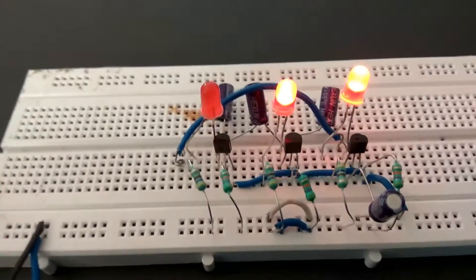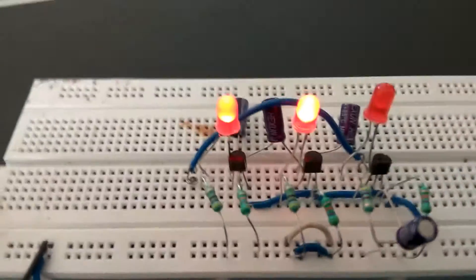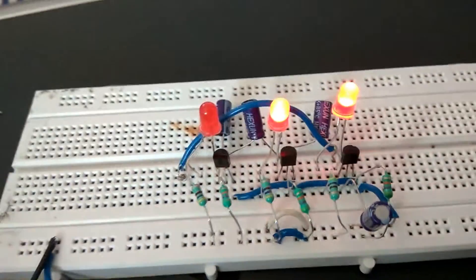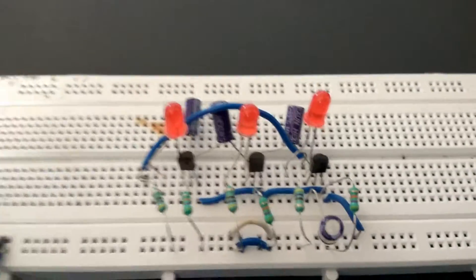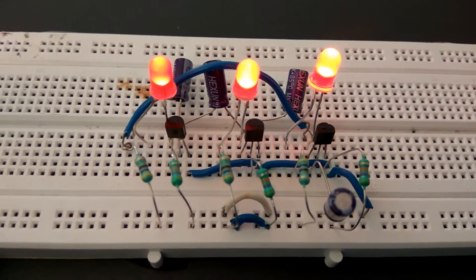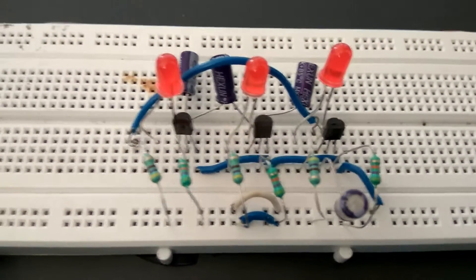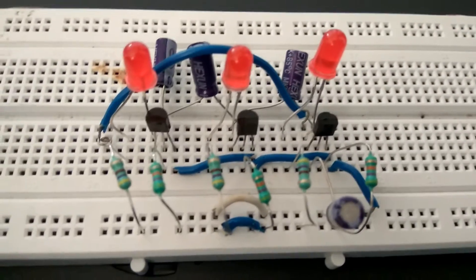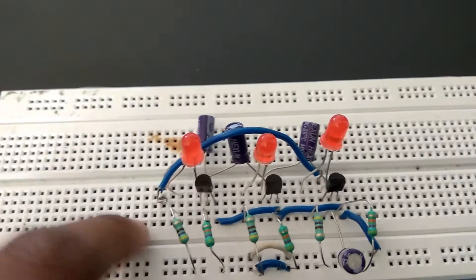You can also attach more transistors and LEDs to the circuit. Just repeat the same process. Attach one more transistor, one more LED, and connect the capacitor around to expand the pattern.